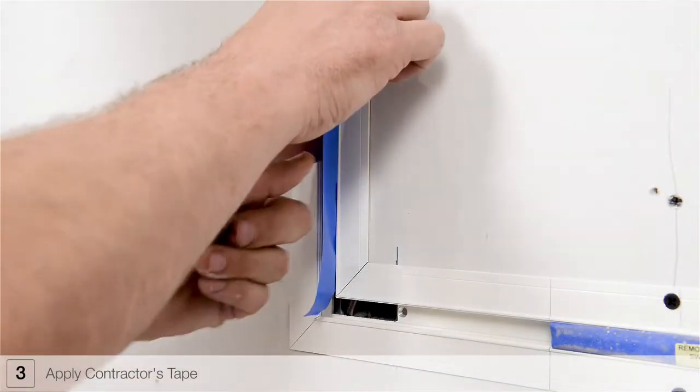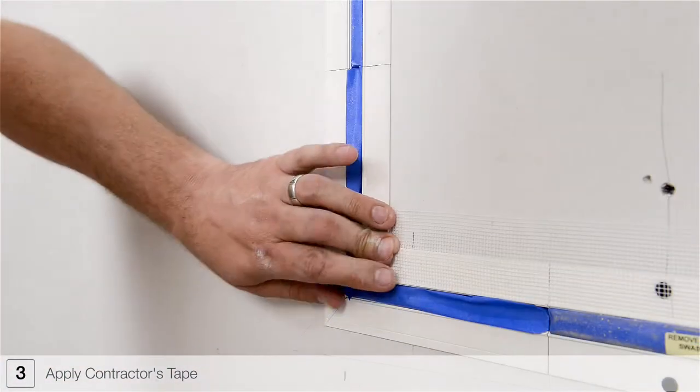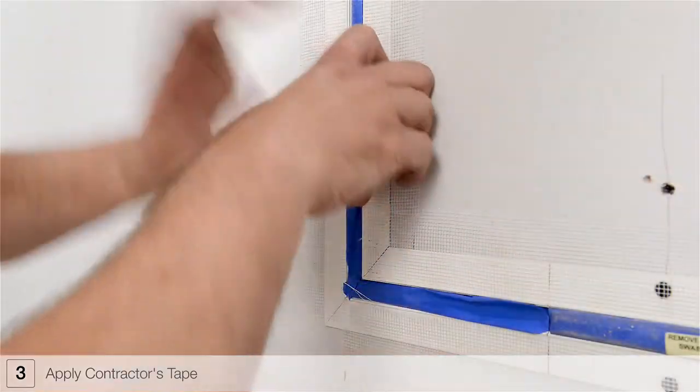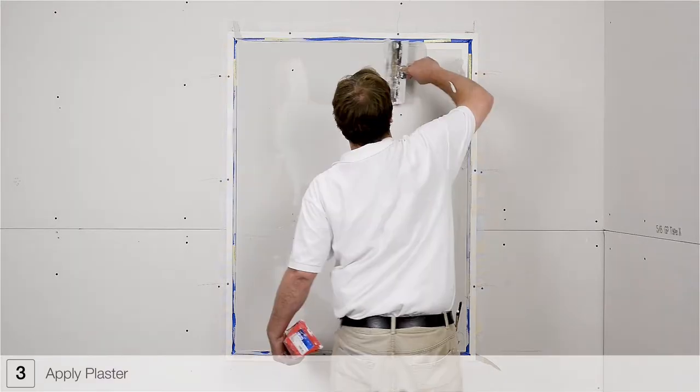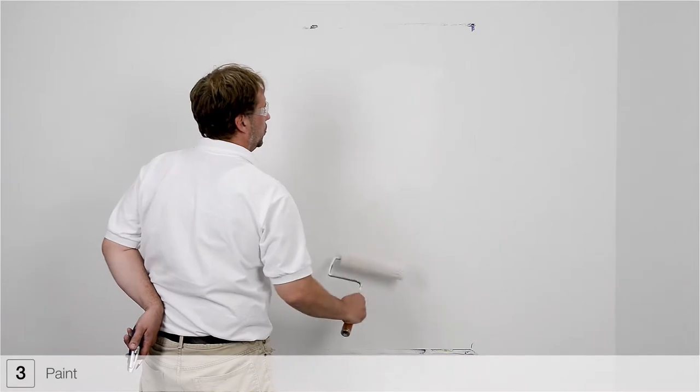Before beginning the plastering process, mask the interior of the channel using contractor's tape. Apply ultra-thin drywall tape to the TrueLine channel. Do not overlap sections of drywall tape. Plaster, sand and paint the installation.